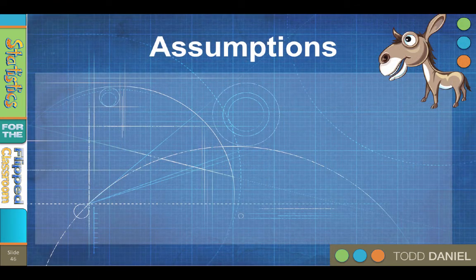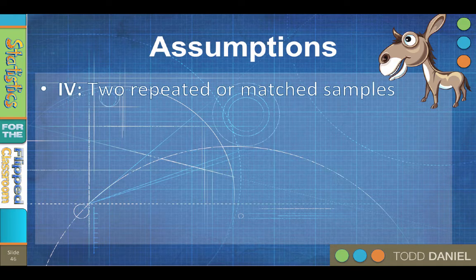All inferential statistics are built on certain assumptions. If your assumptions are wrong, then your conclusions will likely also be wrong, so it is important that you check your assumptions. There are some assumptions for the paired samples t-test that you can get away with violating, and others you absolutely cannot. One non-negotiable is that a paired samples t-test can only be used to compare two repeated or matched samples — you must have a before and after design or matched pairs, and you can only have two groups. If you have more than two repeated measures, use a repeated measures ANOVA.